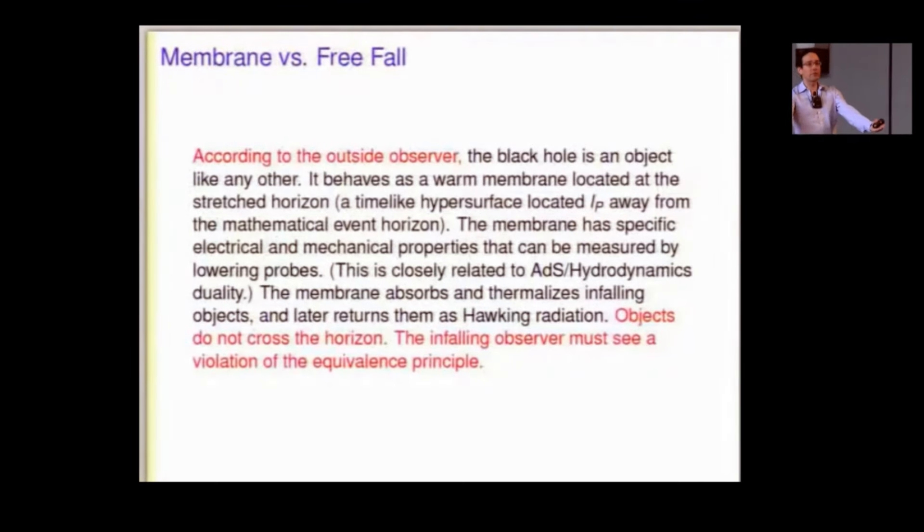The description from the outside observer's point of view is that, well, you send some stuff in, then this object forms a black hole. It's like a membrane. You can probe it. It has electrical and mechanical properties. It has a temperature. It slowly fizzles away. In the end, it's disappeared into radiation. Of course, you know, this all makes sense. The S matrix is unitary. You form something and it fizzled away. It's not that different from making a piece of coal that's hot and letting it fizzle away.